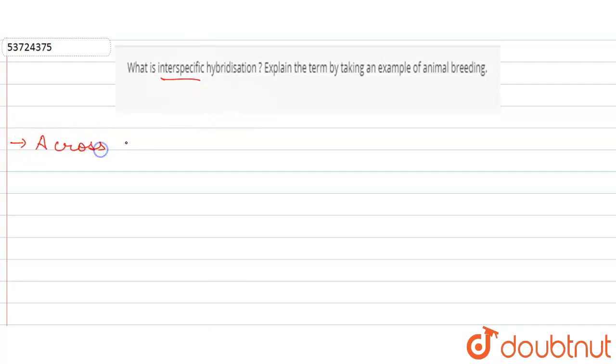A cross or mating between two different related species is called interspecific hybridization.